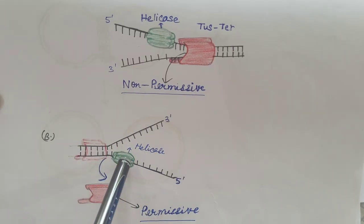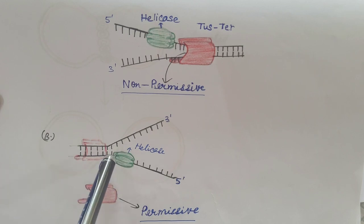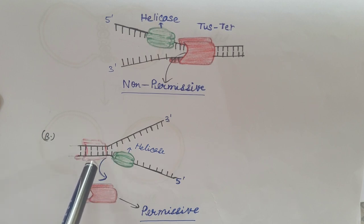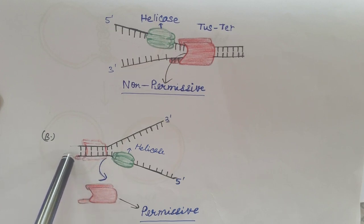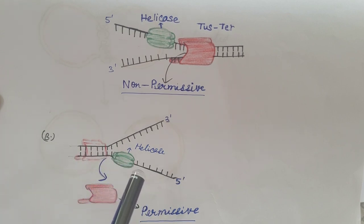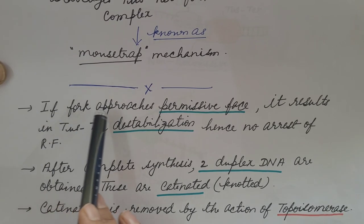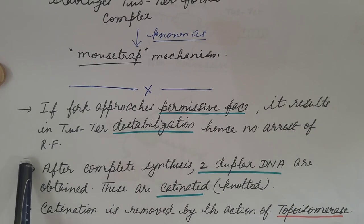Now, when the helicase enzyme approaches the permissive phase, unwinding of the DNA also takes place. But here the conserved cytosine residue is not flipped, and there is no binding of cytosine to the cytosine binding pocket of the TUS protein. So the TER-TUS complex is not stabilized — the TUS protein is released, helicase can easily proceed through it, and the replication fork is not arrested. In summary: if the fork approaches the permissive phase, it results in TER-TUS destabilization and hence no arrest of the replication fork.